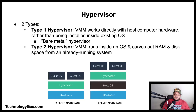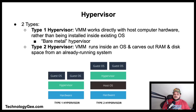There are two types of hypervisors. A Type 1 hypervisor is a virtual machine manager that works directly with the host computer hardware rather than being installed inside of an existing operating system. Type 1 hypervisors are often referred to as bare metal hypervisors. A Type 2 hypervisor is a virtual machine manager that runs inside of an operating system and carves out RAM and disk space from an already running system.